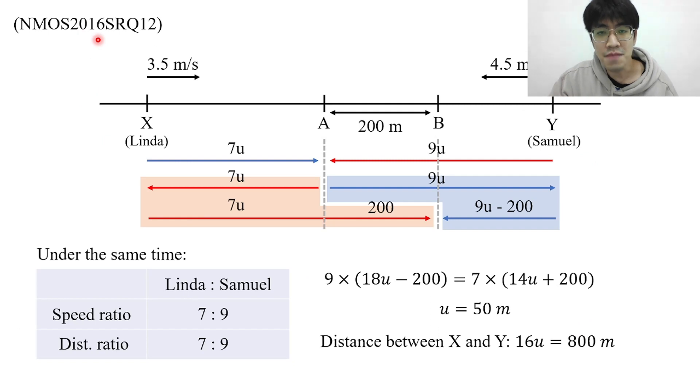It is worth remembering that most of the travel problems that you see in the exam can be solved by making use of the ratio. Under the same amount of time the speed ratio is always equal to the distance ratio, and if under the same amount of distance then the speed ratio would be the opposite of the time ratio. We're going to look into this later on our channel.